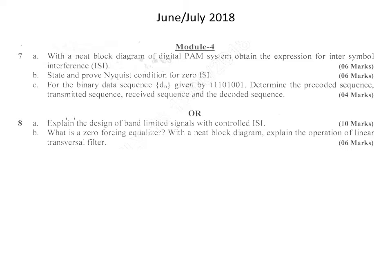Similarly, use the received sequence and decoded sequence equations to write the sequences. The next question is: explain the design of band-limited signals with controlled ISI — a very important question covering the procedure and set of equations. The following question asks: what is a zero forcing equalizer? With a neat block diagram, explain the operation of the linear transversal filter. We should explain ZFE for 3 marks, then draw the block diagram for the linear transversal filter.